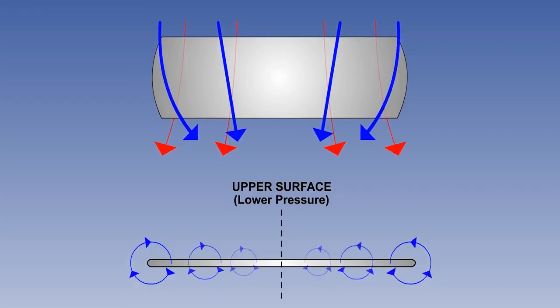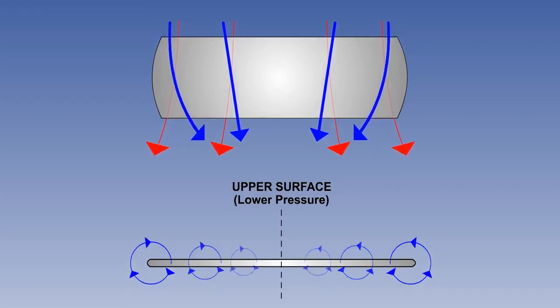At lower IAS and therefore higher angles of attack, the decreased cordwise vector and increased spanwise vector, due to the greater pressure differential, will increase the resultant spanwise flow, making the vortices stronger.